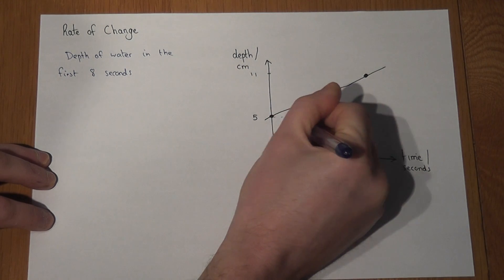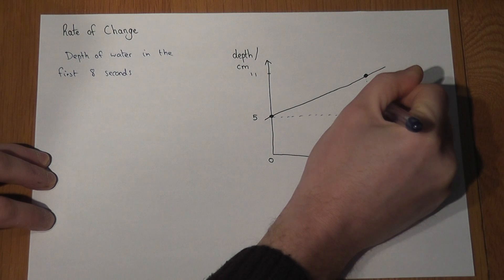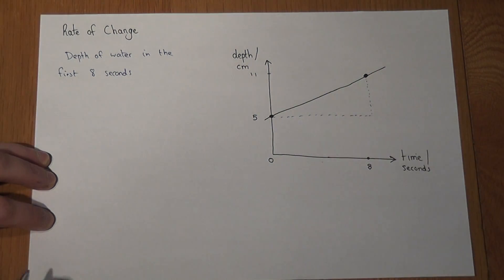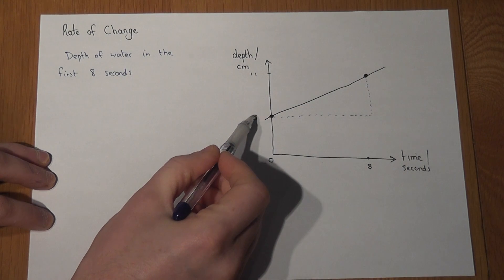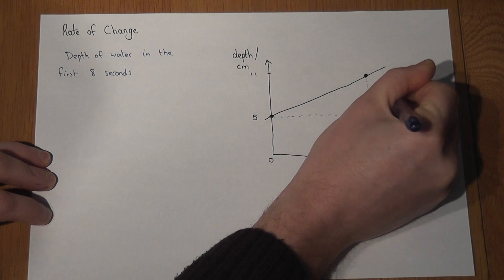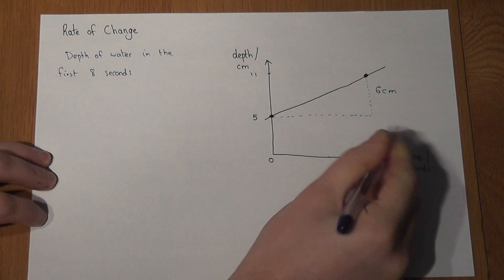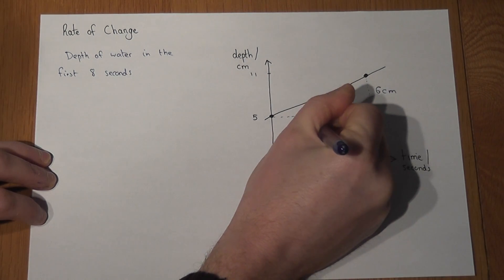In those eight seconds we find how much the depth of water has changed by. Well it's gone from 5 to 11, so the depth increased by 6 centimeters and that took a total of eight seconds.